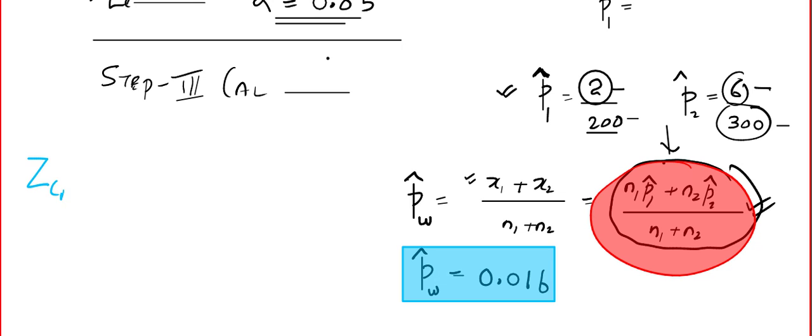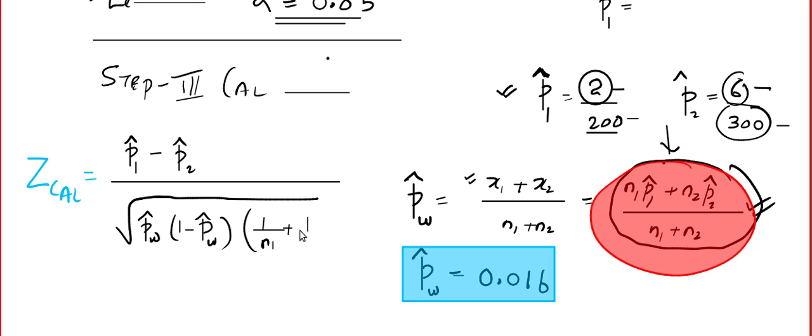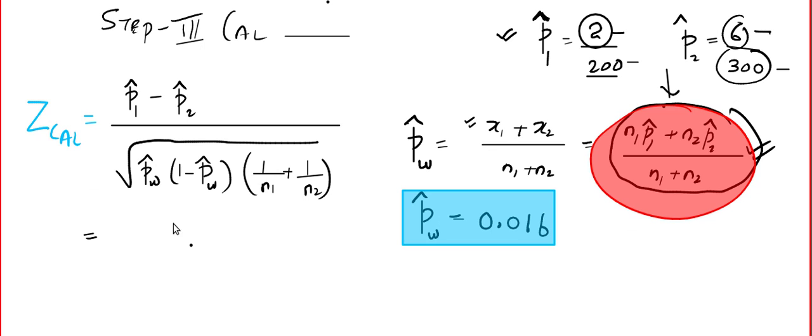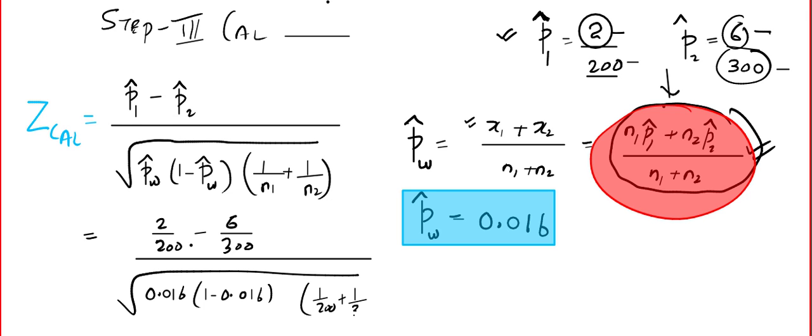Now the formula for Z calculated goes like this: P1 cap minus P2 cap, the whole divided by root under combined proportion times 1 minus combined proportion as a product, 1 by n1 plus 1 by n2. Here n1 is 200, n2 is 300. You just plug in all those values. Use a calculator, you can use the fraction button and do it in a single step. 2 by 200 minus 6 by 300, the whole divided by root under 0.016 times 1 minus 0.016 into 1 by 200 plus 1 by 300. I ended up with Z calculated is equal to minus 0.873.